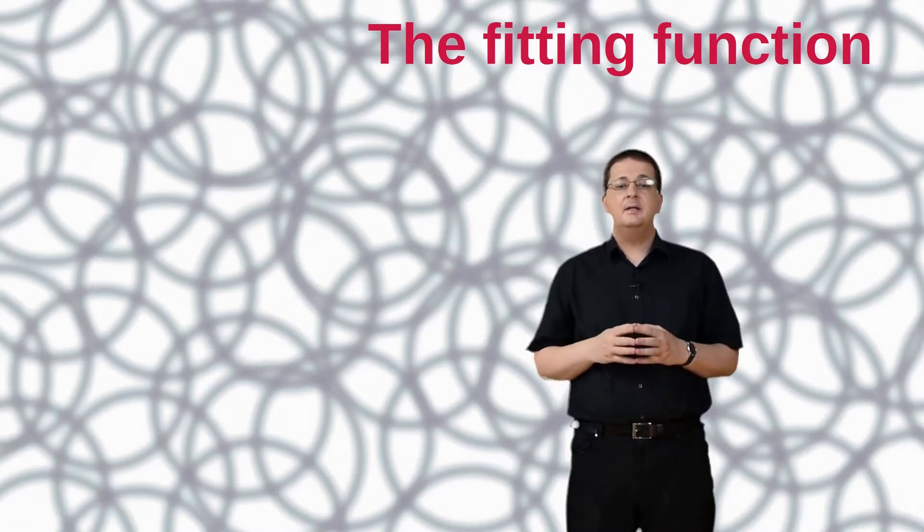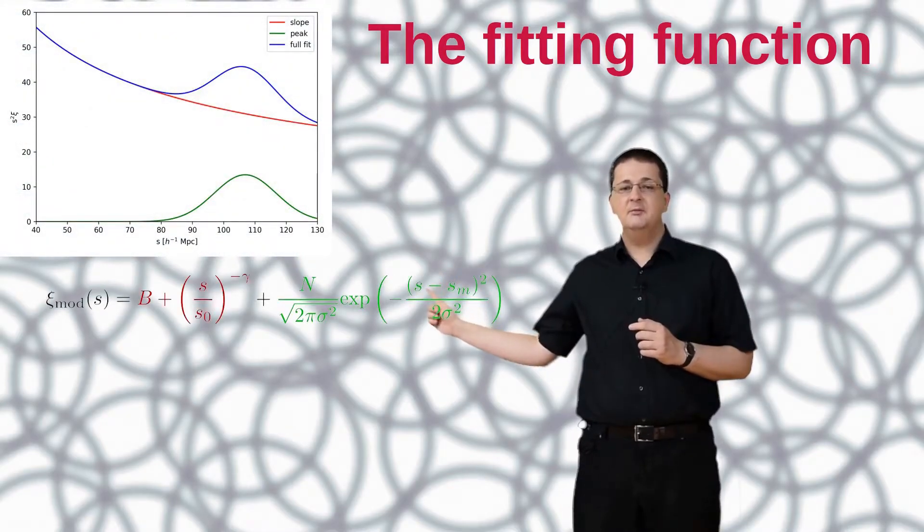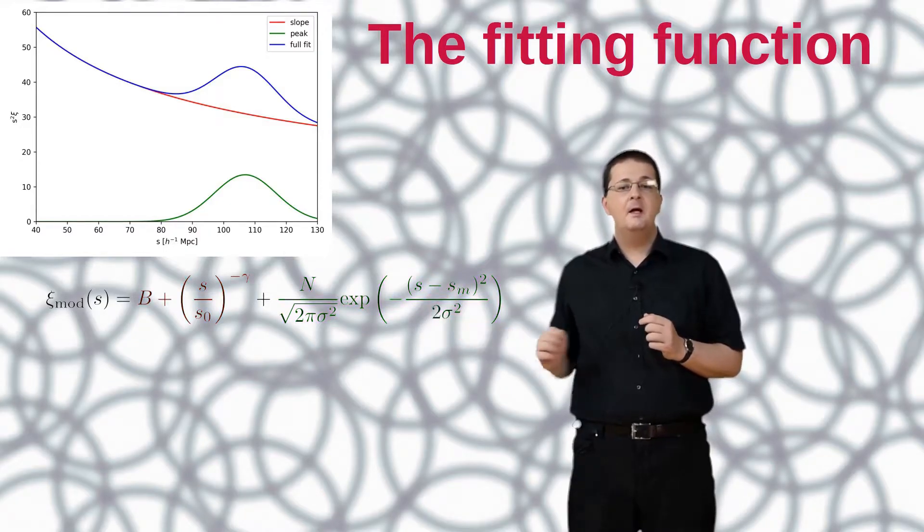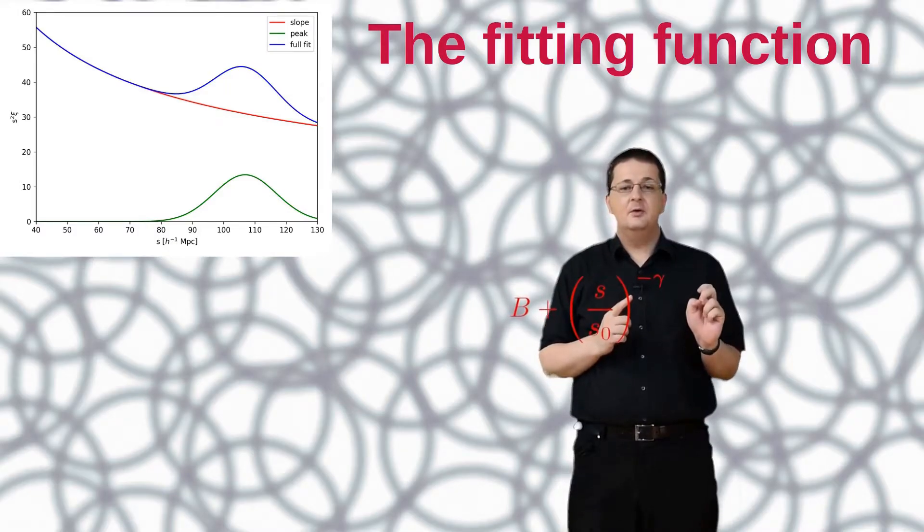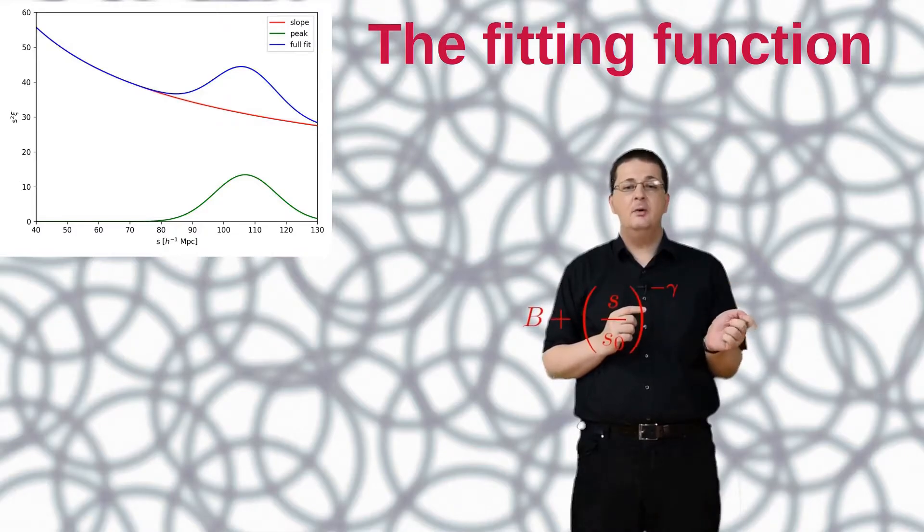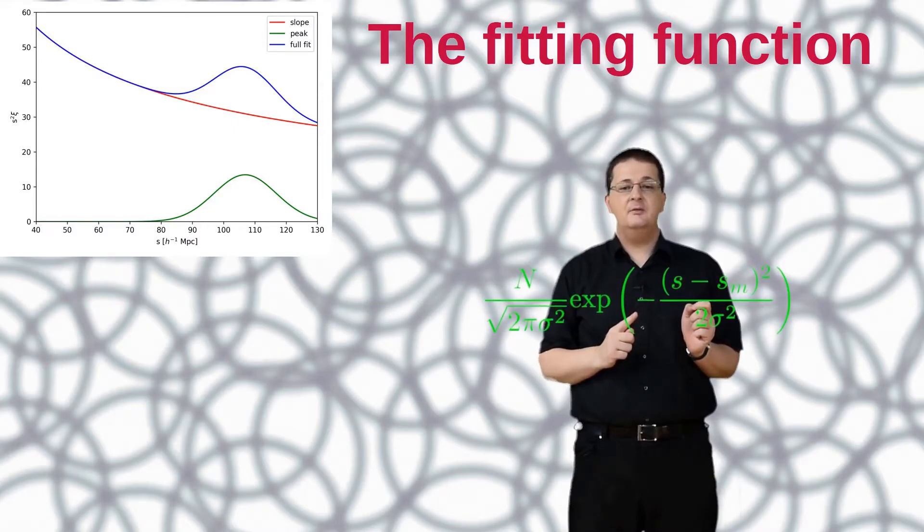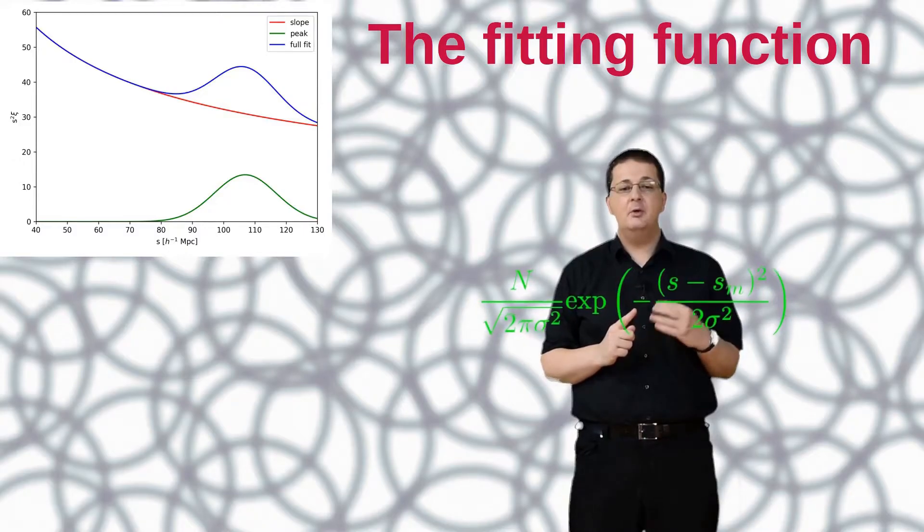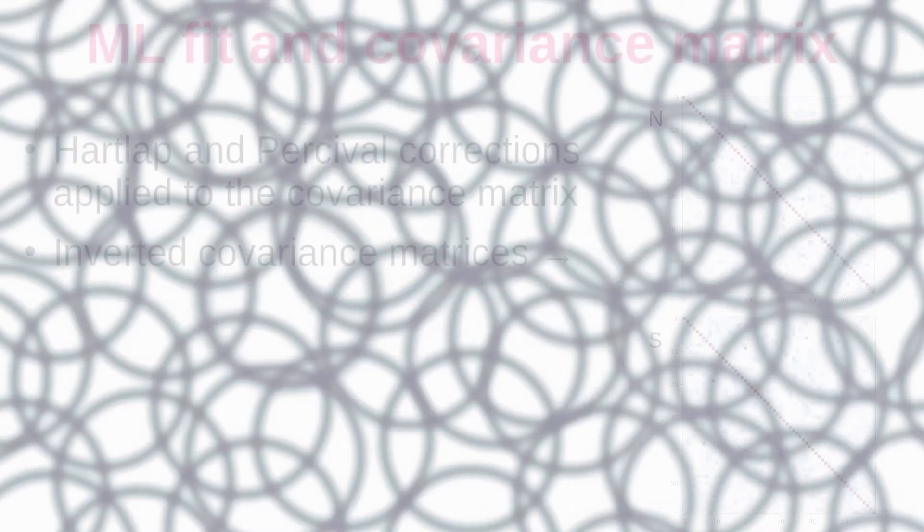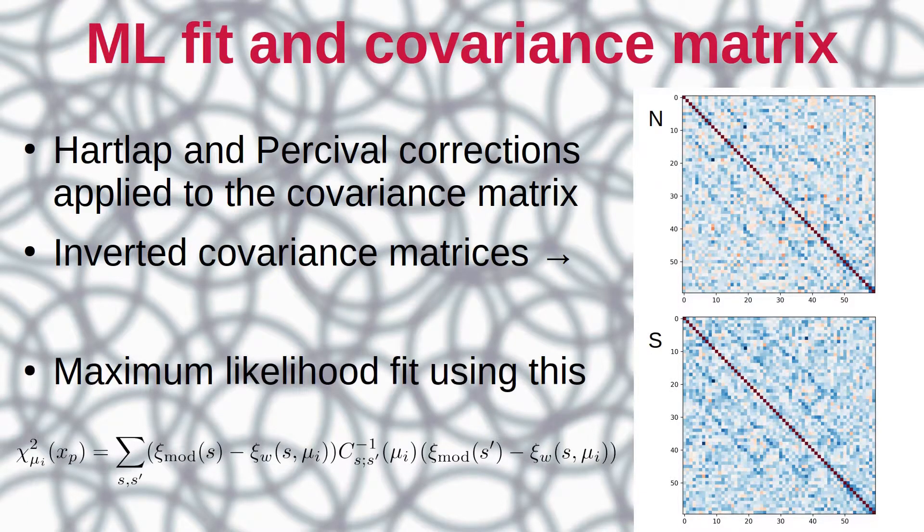While we can spot the BAO feature in the data by just eyeballing it, we need a more profound way to measure the peak location. To this end we will fit this function, which is based on Sanchez 2011. It consists of two terms. A power law, gamma with a scale length S0 and an offset B, which represents the slope of the two-point correlation function. The other term, which represents the BAO feature, is a Gaussian with an amplitude A, a width sigma zero and a central location SM. The BAO peak location is the aforementioned SM. In order to do a solid fit to our data points and to take into account the correlation between the different mu and S bins, we calculated a covariance matrix using mocks. We perform our maximum likelihood fit using this equation.